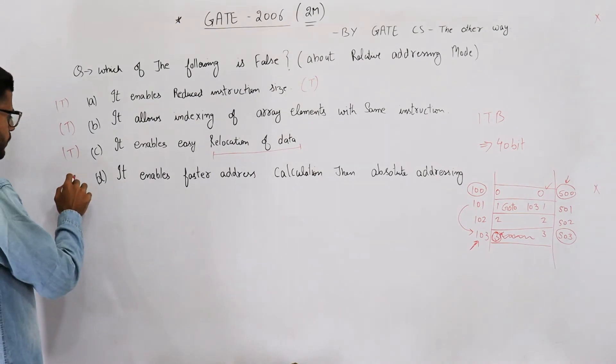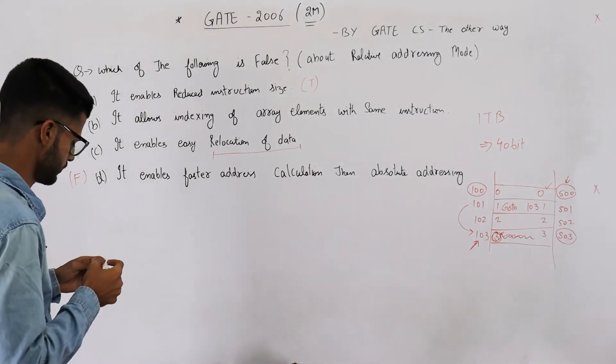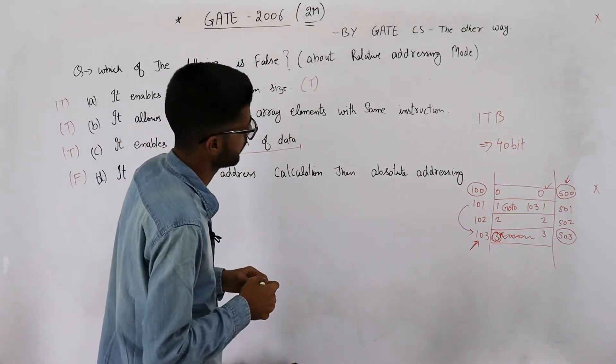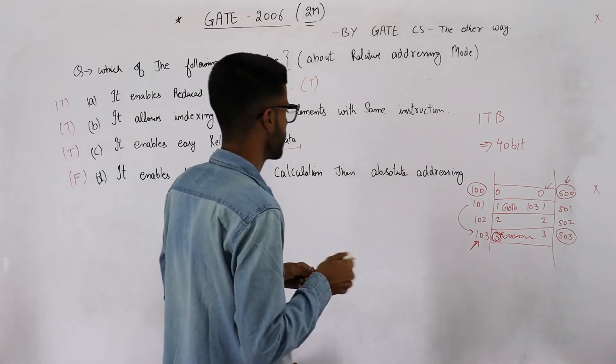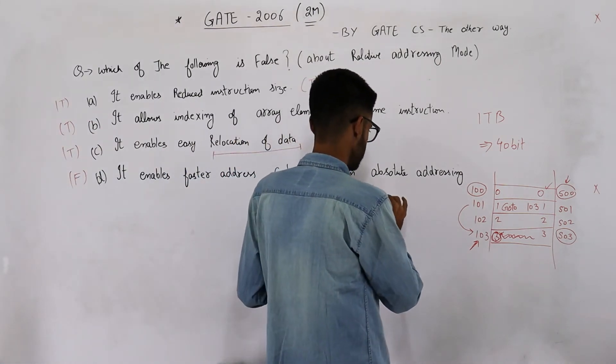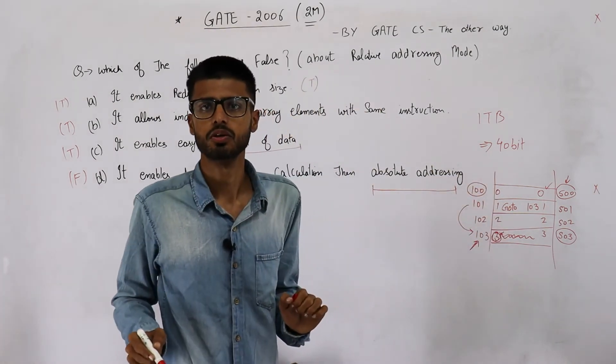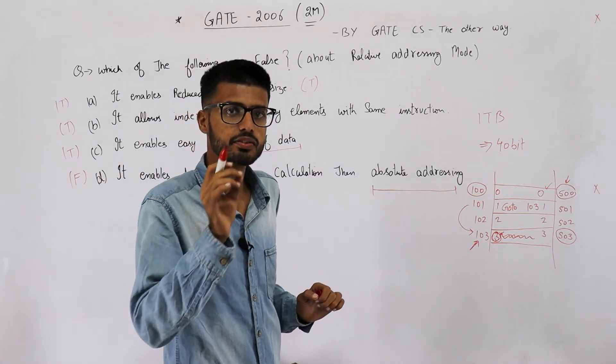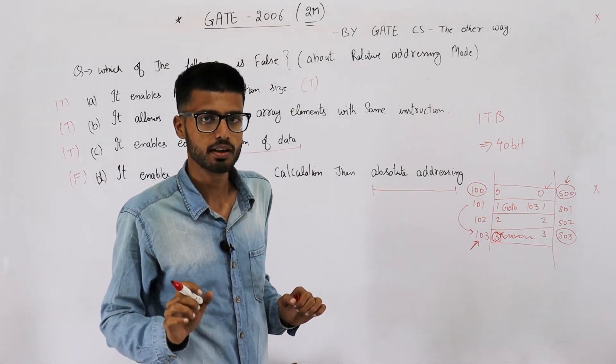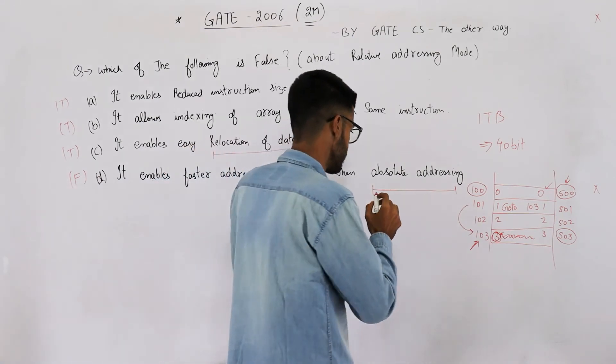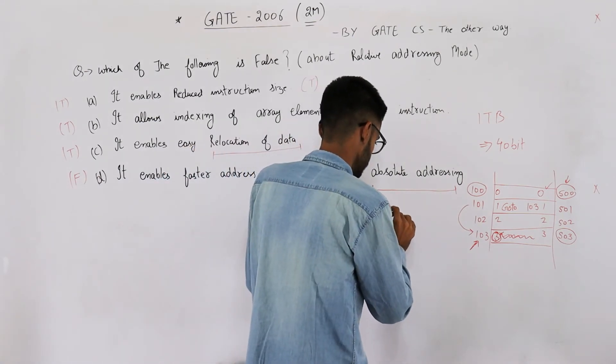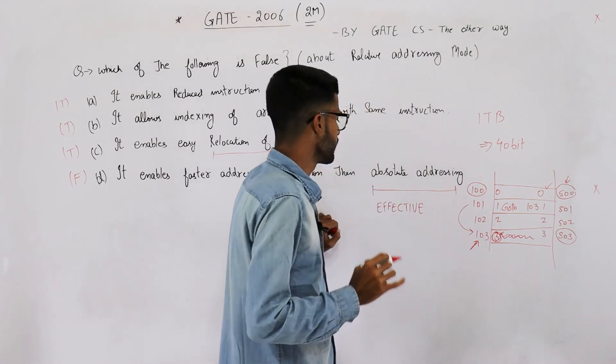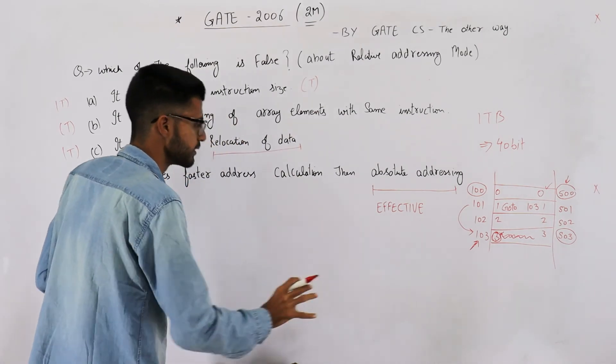It enables faster address calculation than absolute addressing. No, it's not possible. Absolute addressing means the instruction itself provides the absolute address, or the instruction itself provides the exact address where to look for in memory. You don't need to perform any calculations for getting the address. So the absolute address or effective address is present within the instruction.